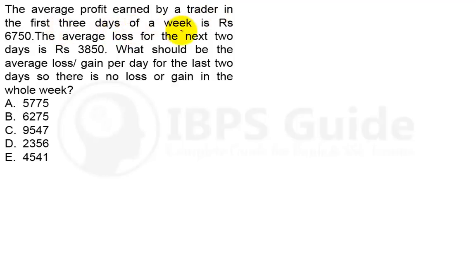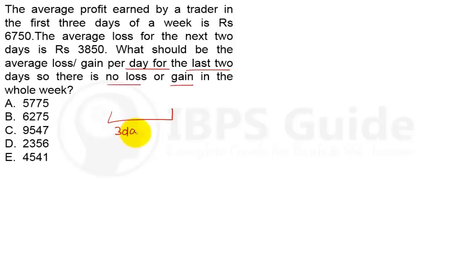The average loss of the next two days is rupees 3850. What should be the average loss or gain per day for the last two days, so that there is no loss or no gain in the whole week? In the first three days, the average profit is 6750, so the total profit in these three days is 3 × 6750, which is positive.